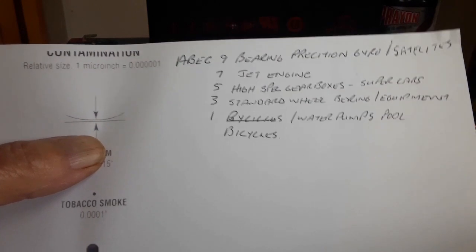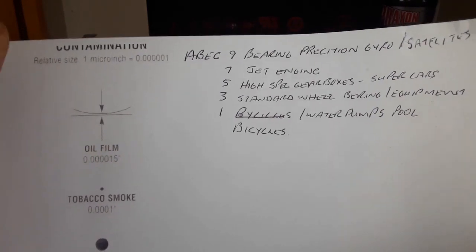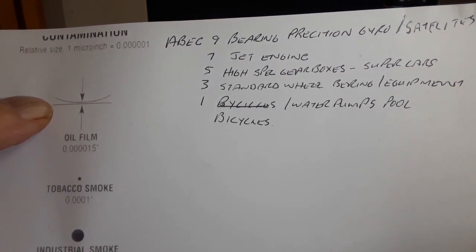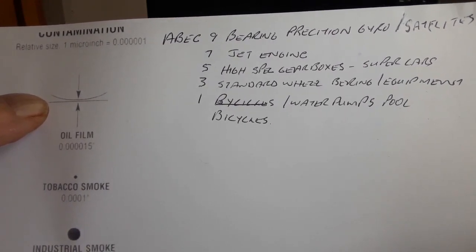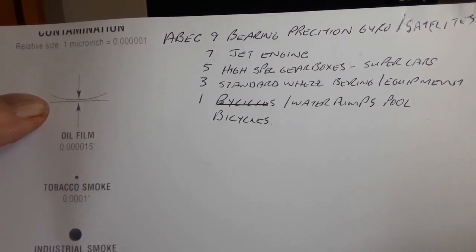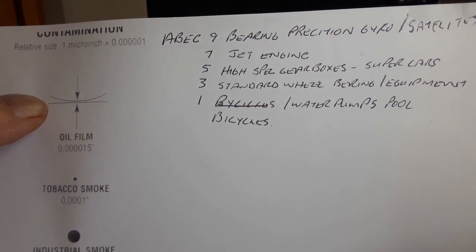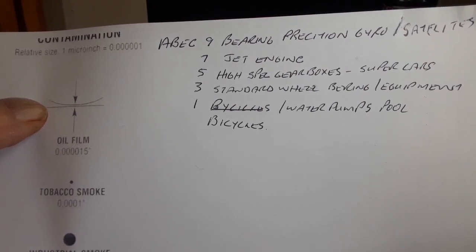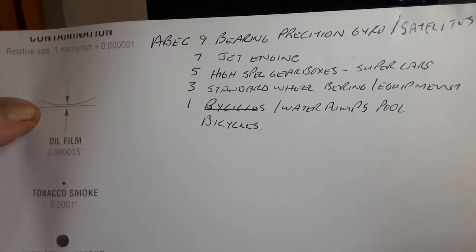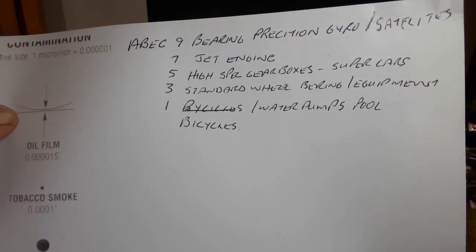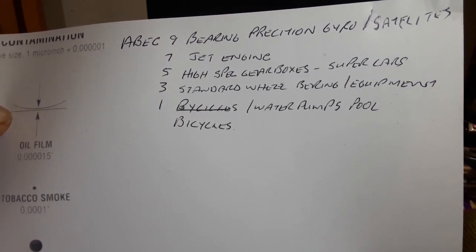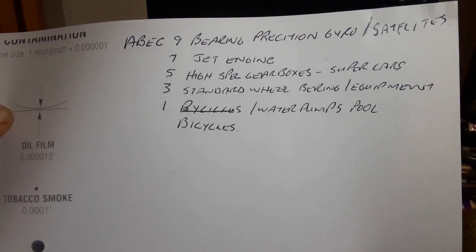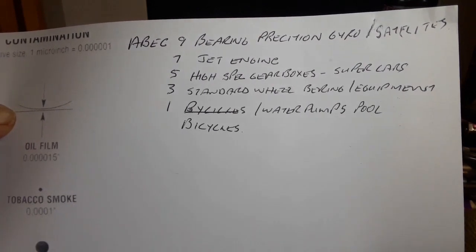ABEC 1 covers typical bicycle bearings, pool water pumps, and low-RPM industrial applications. ABEC 3 is essentially a standard wheel bearing — what you'd find on a car or farm equipment like tractor wheels and discs. Those fall more or less in the ABEC 3 range.